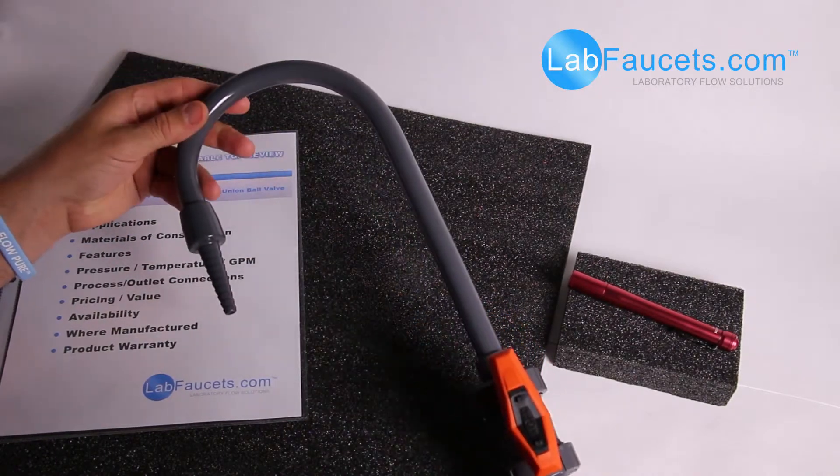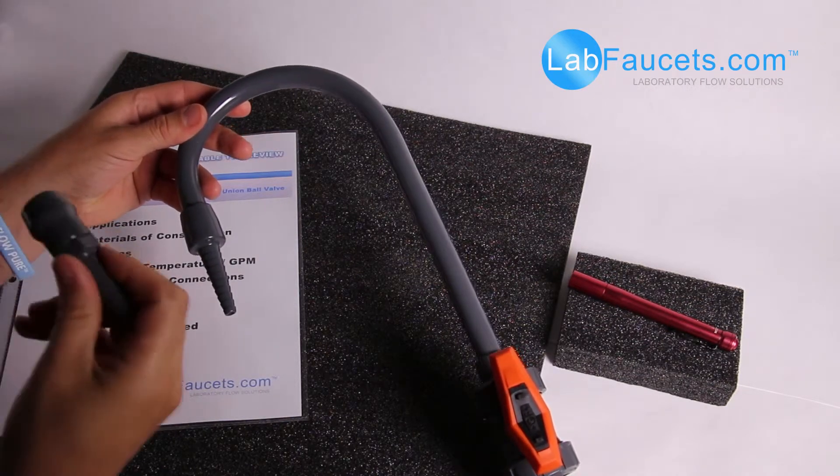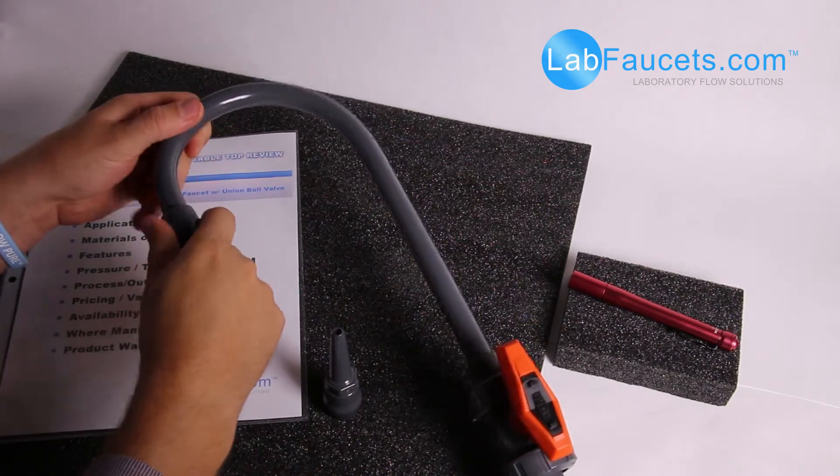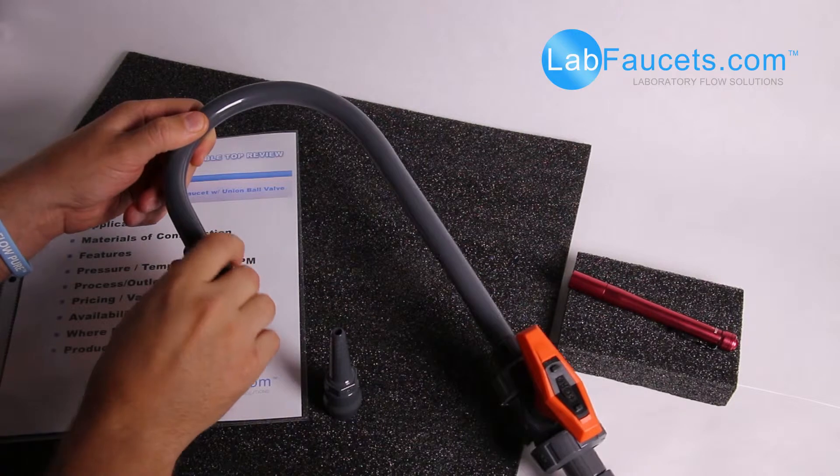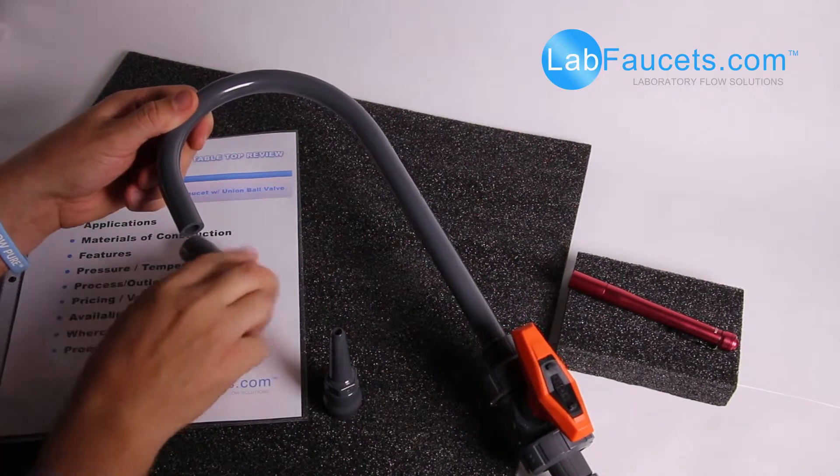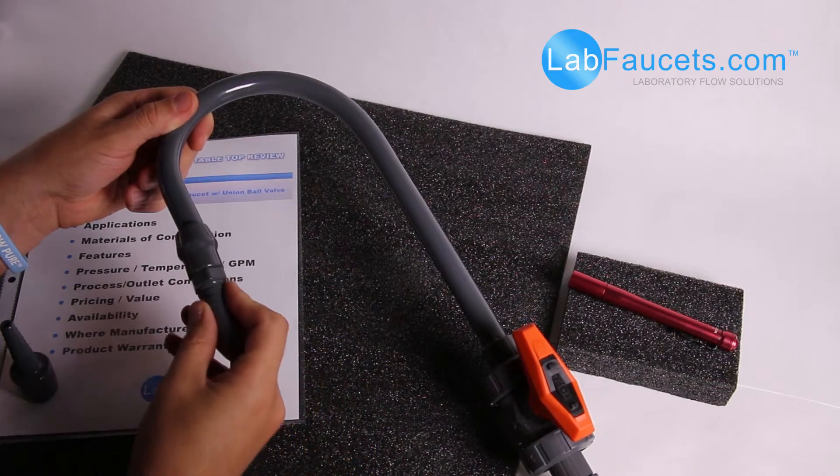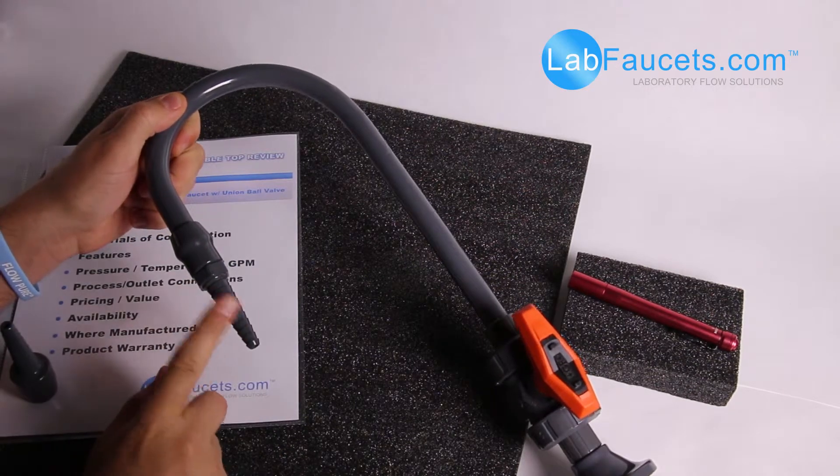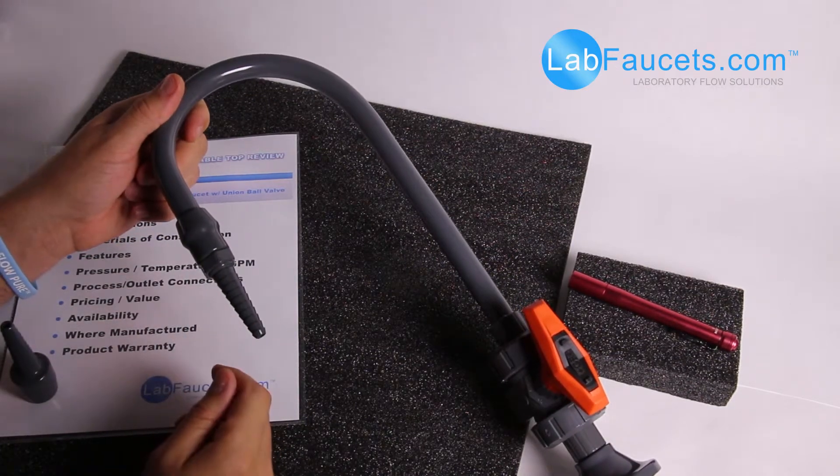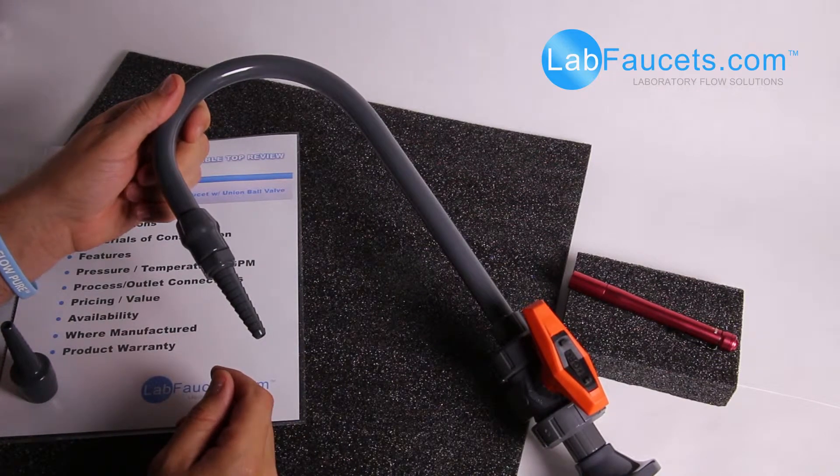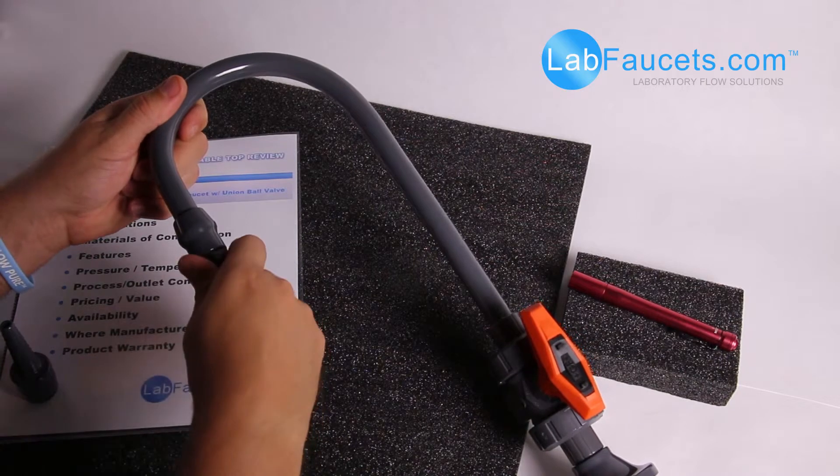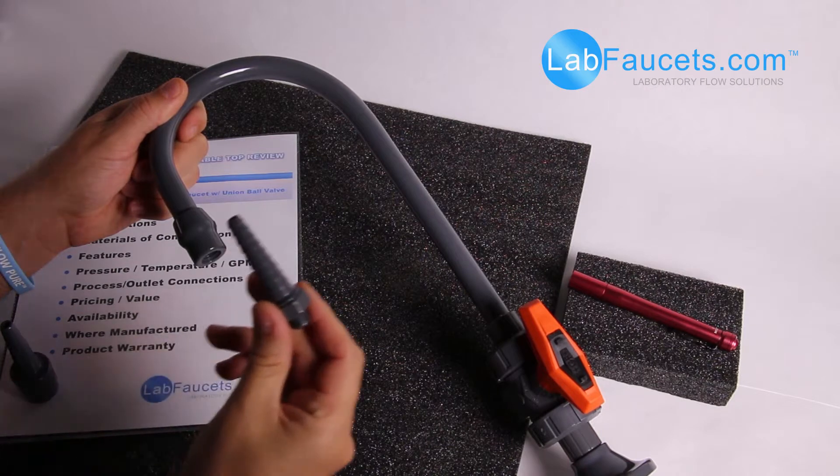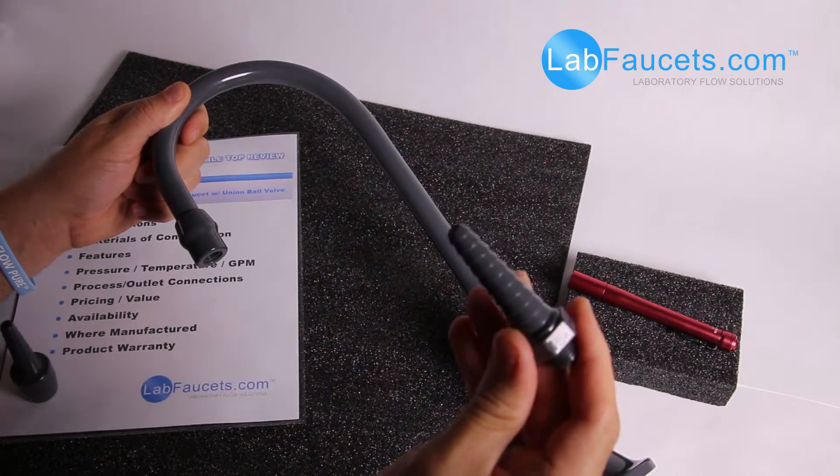This faucet can also be purchased with a removable barb tip. And for illustration purposes, I have a unit here that is not solvent welded to show you. This adapter fitting here provides an injection molded removable PVC barb tip. This barb tip is also serrated and also accepts quarter-inch through half-inch ID tubing.